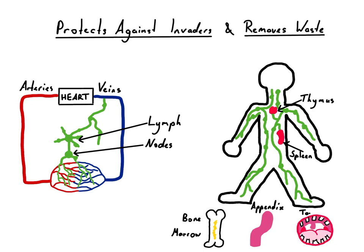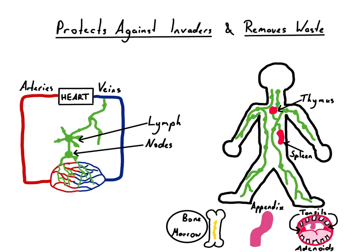The tonsils, appendix and Peyer's patches found along your gastrointestinal tract and respiratory tract do a similar job to lymph nodes. These are extra checkpoints to ensure that what you are breathing and eating will not make you sick. The other three lymphoid organs — the thymus, spleen and bone marrow — provide an environment for some of your immune cells to mature before being released into your body.